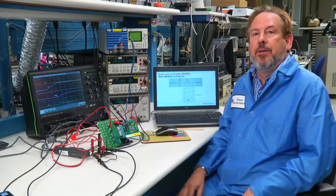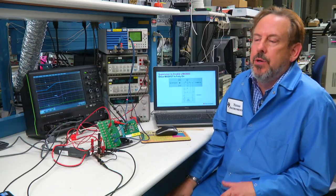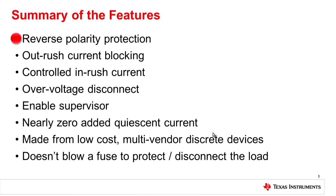Well, there you have it. We've shown you an application circuit that provides many features, including reverse polarity protection, outrush current limiting in the event somebody shorts the battery bus, there's controlled inrush current, an over-voltage disconnect that turns off the MOSFET protecting the downstream power supply, and an enable supervisor that we recommend in some applications.